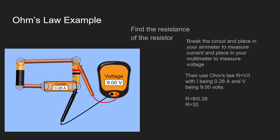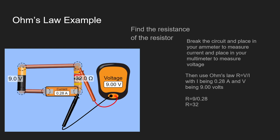So when we plug that in, R is equal to 9 divided by 0.28 and resistance comes out to be 32. And when we check that is the same thing that we get on the readout.